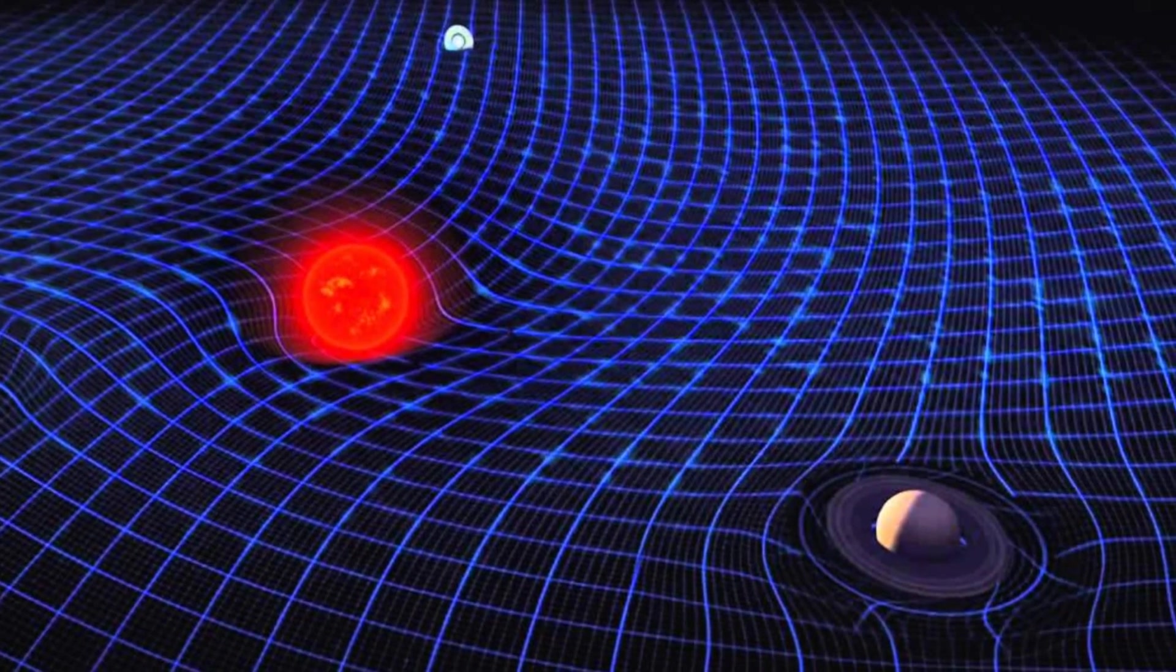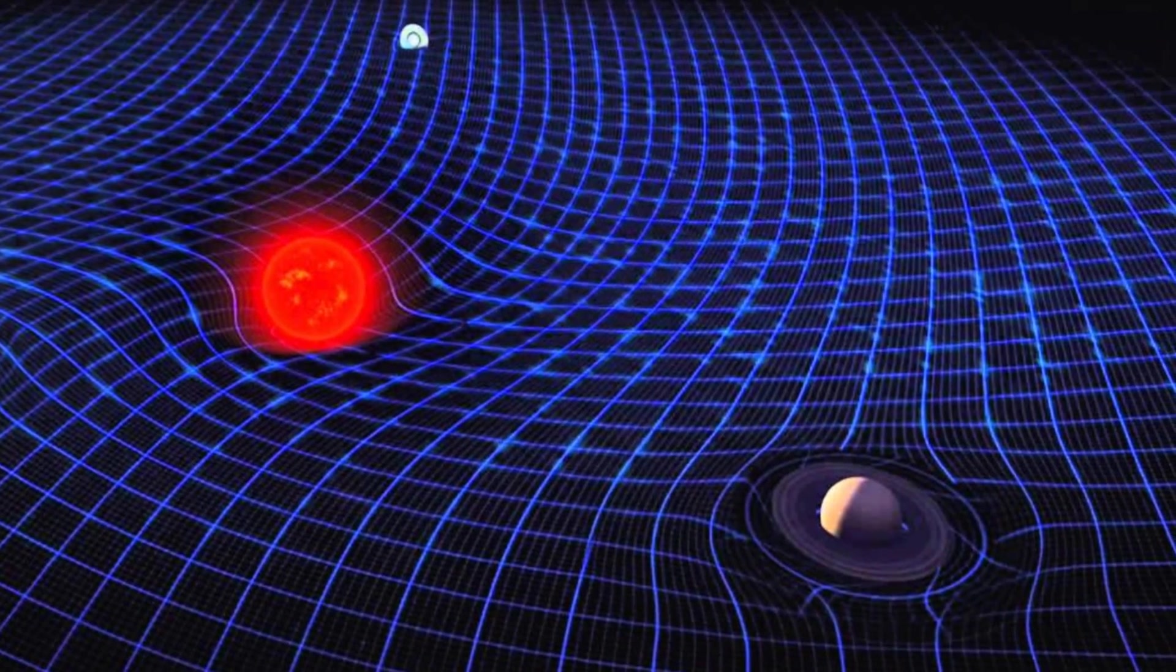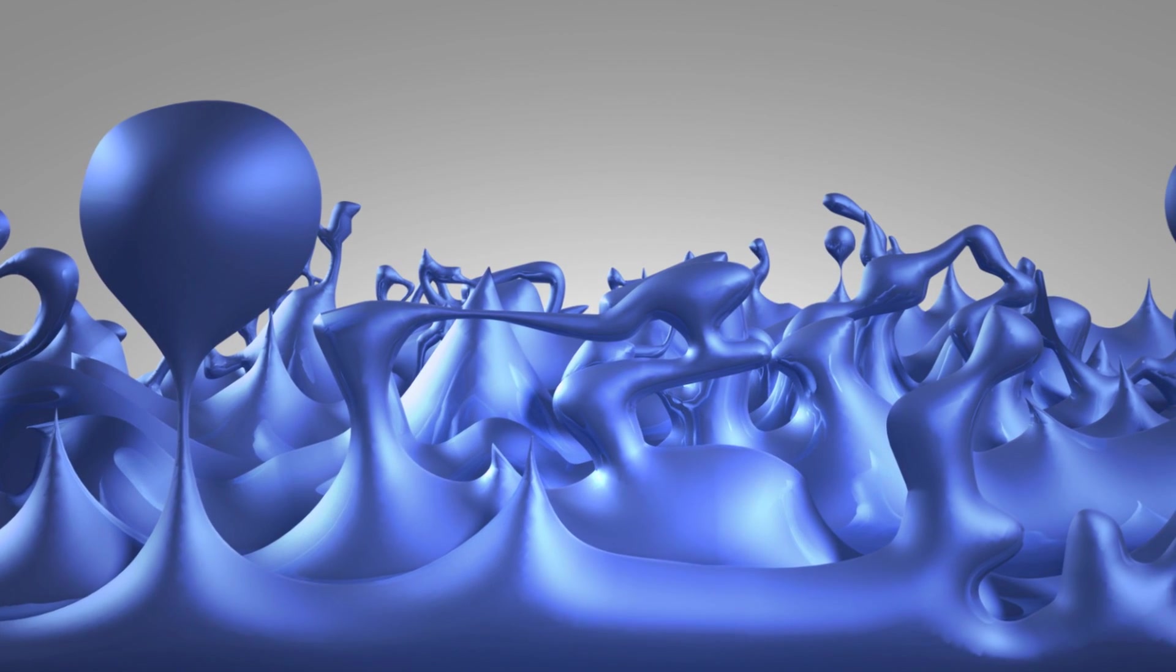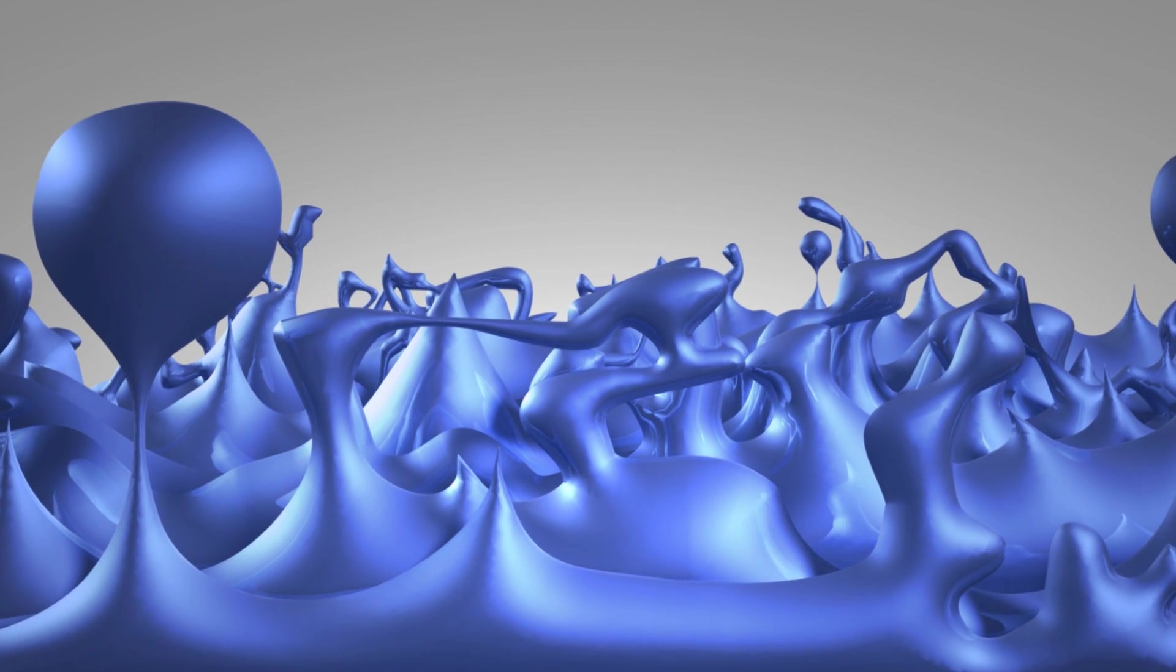The physics of Einstein describe space-time as smooth and uniform. Quantum theories describe space-time as more of a foam with a much more variable texture.